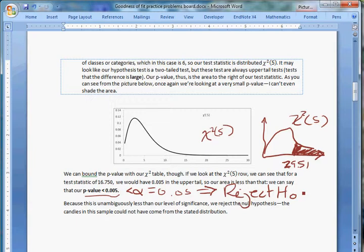We come to the conclusion that we reject the null. We accept the alternative, that these don't match. And they must have come from some other distribution. So that's how you do a multinomial goodness-of-fit test.